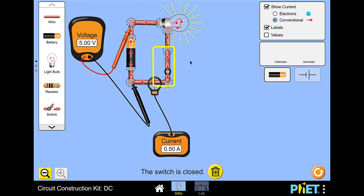Now that we close the switch, we see that the current has changed to half an amp, and the lamp has turned on.